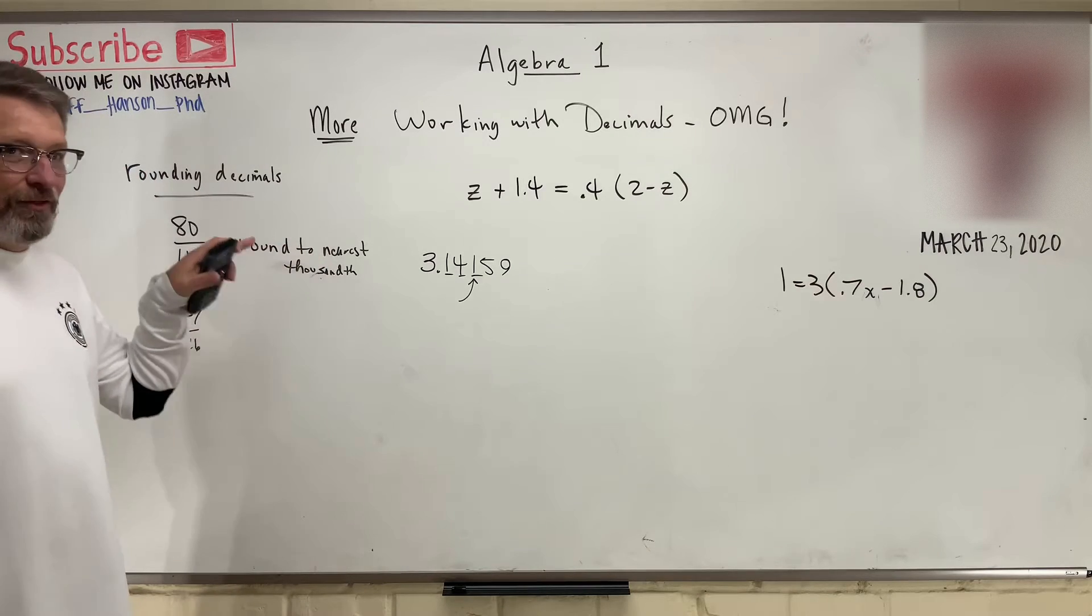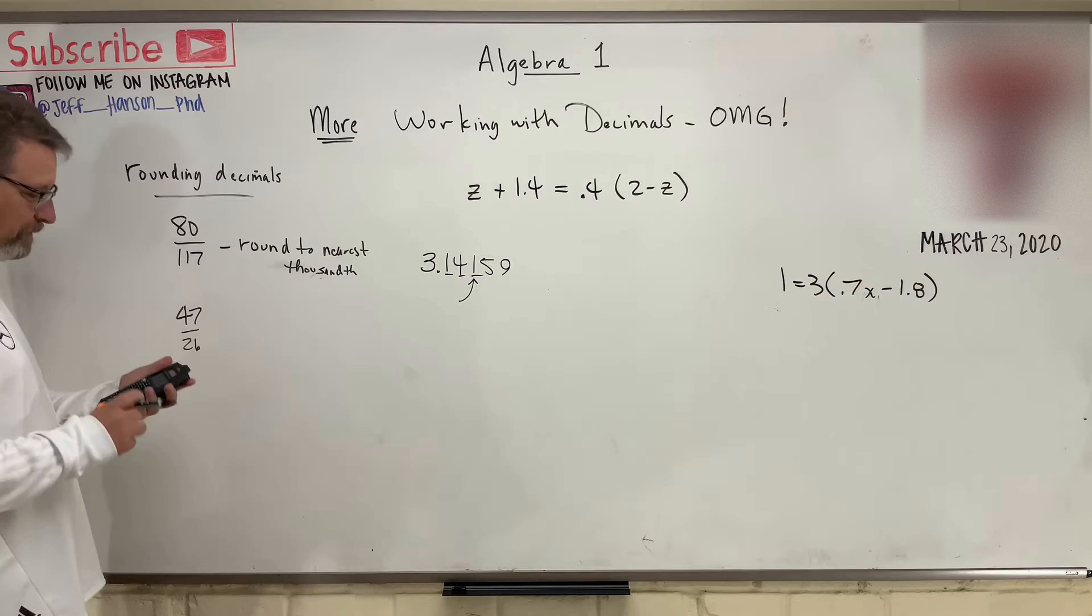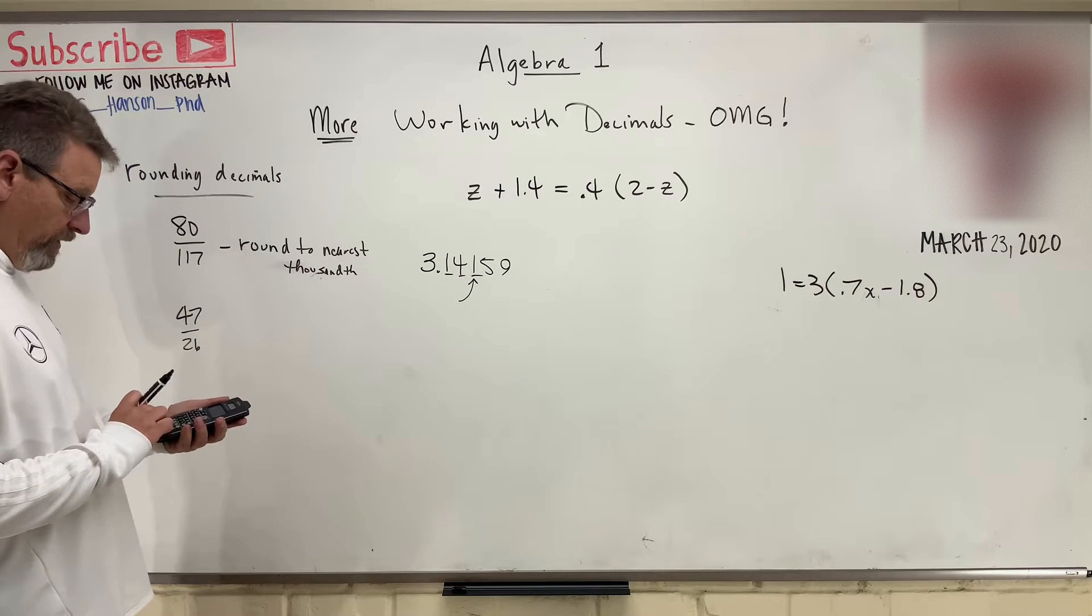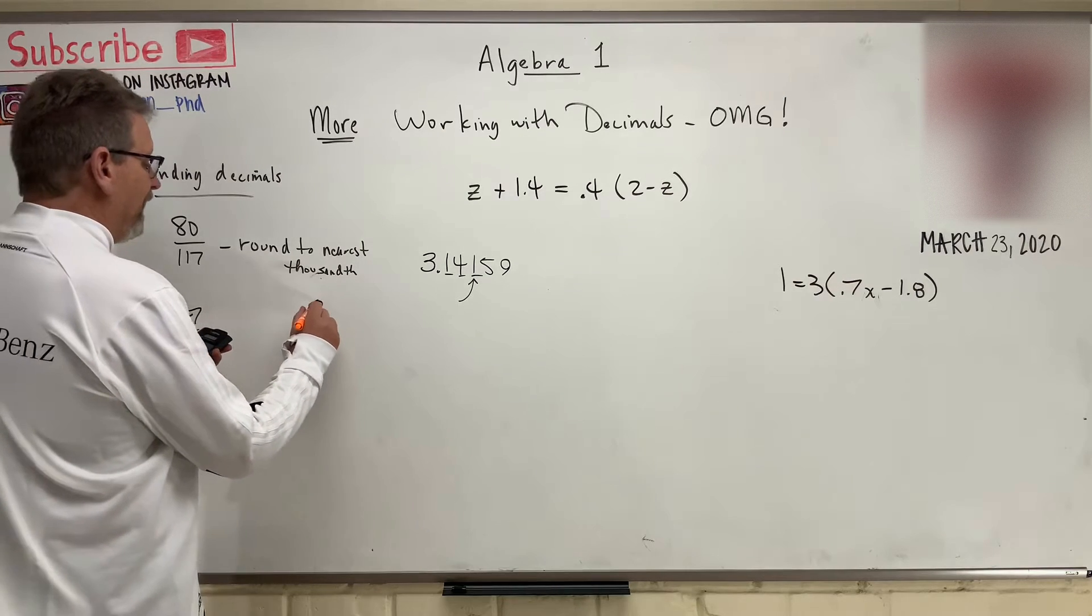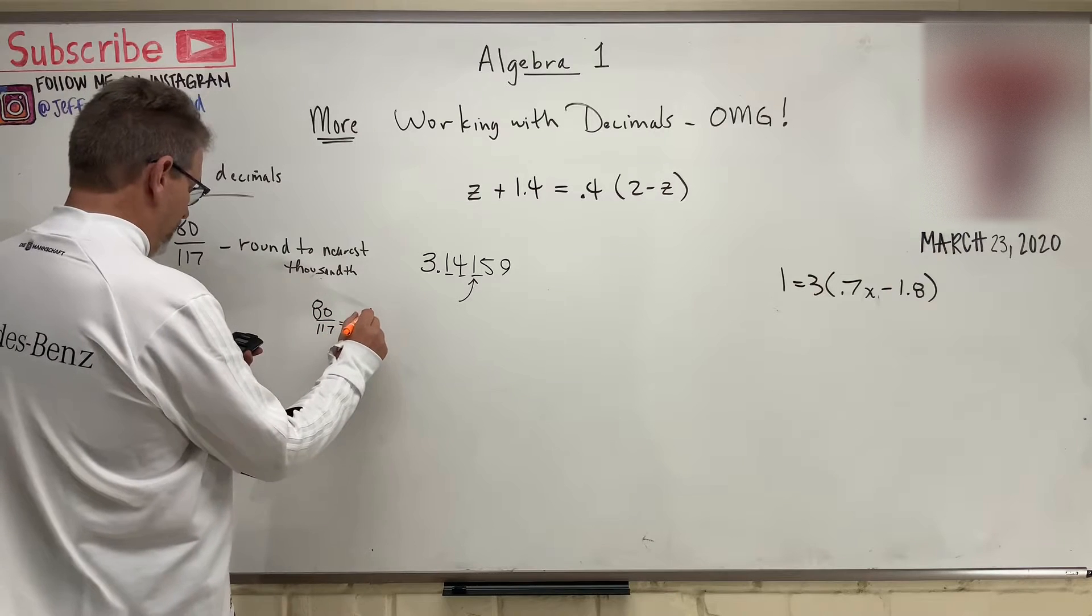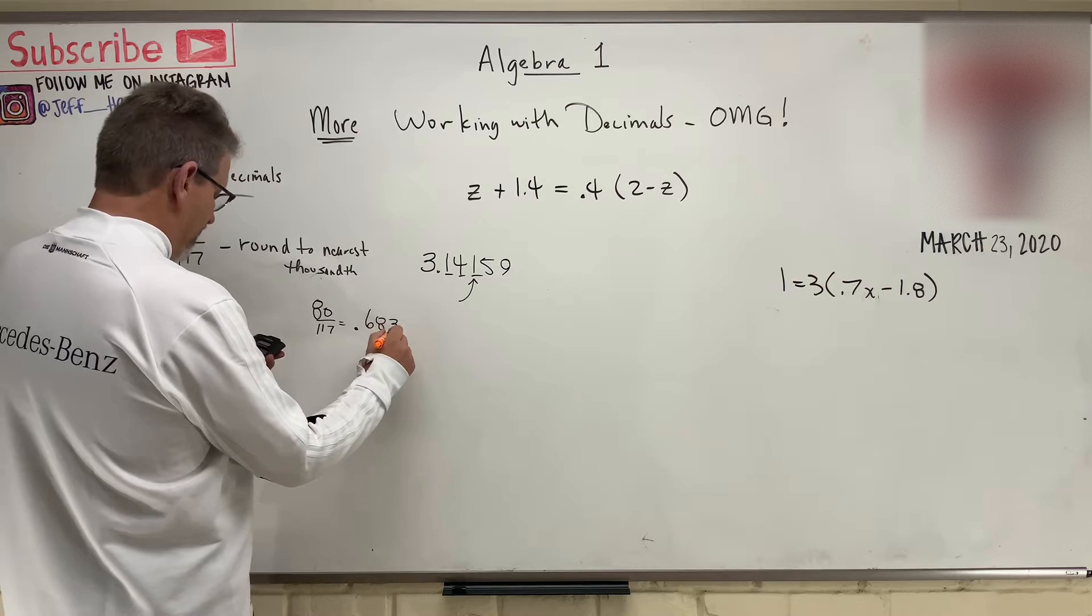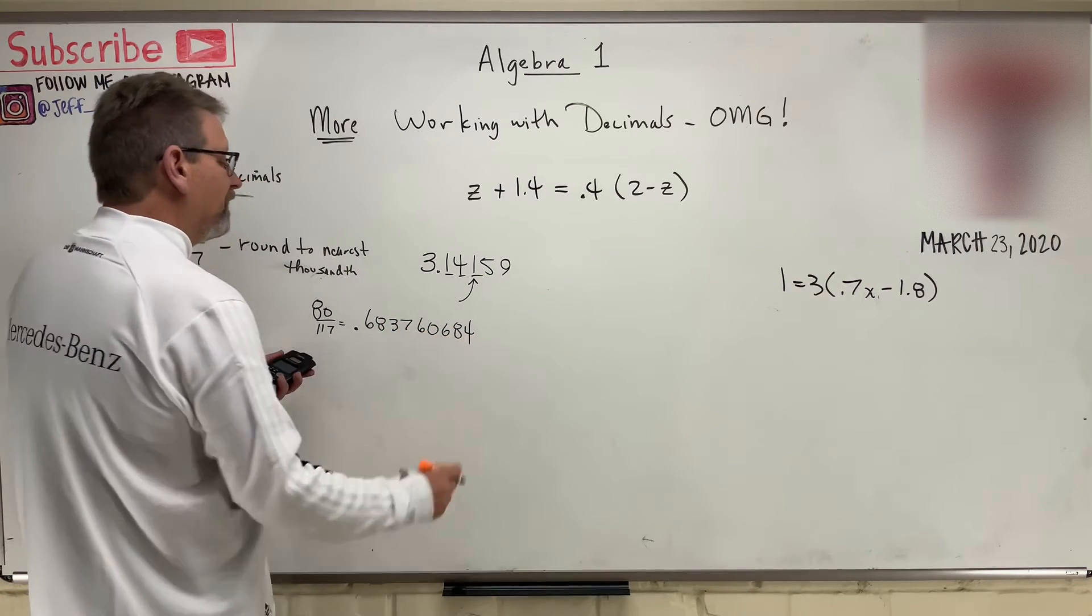Round to the nearest three decimal places is what that's saying. So let's do this. Let's put it in our calculator. Ready? 80 divided by 117 is this. This is equal to 80 divided by 117 is equal to 0.683760684. That's what my calculator says.